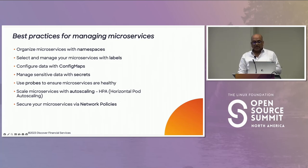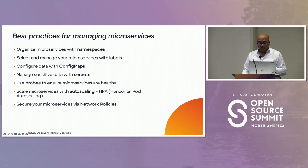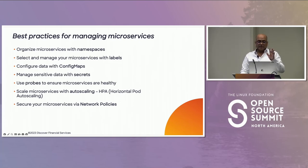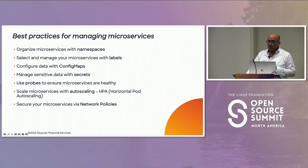Use probes to ensure microservices are healthy — they are important and not easy to implement, but they are Kubernetes resources used to check the health of your microservices. Kubernetes provides three types of probes: Liveness probes check whether a microservice is still running. Readiness probes check whether a microservice is ready to receive traffic. Startup probes tell you that initialization is done and the service is ready. Use HPA — Horizontal Pod Autoscaling — to automatically scale your microservices based on resource utilization or custom metrics, ensuring they're always running at the right capacity and avoiding over-provisioning or under-provisioning.